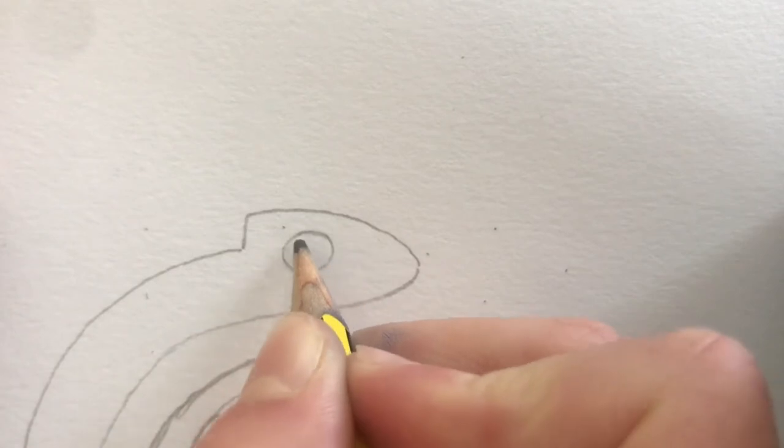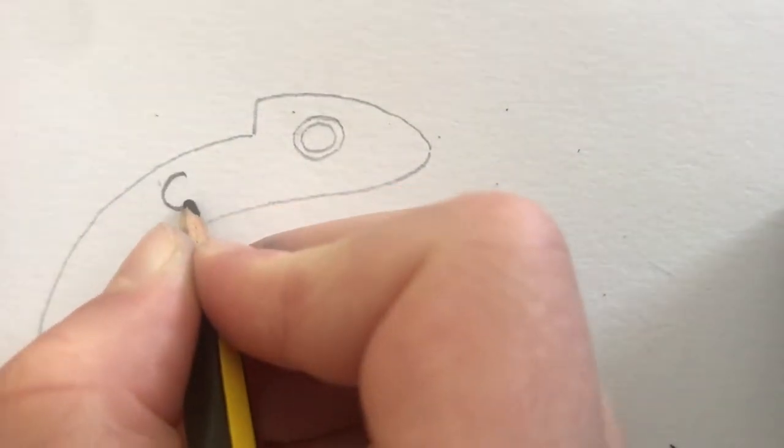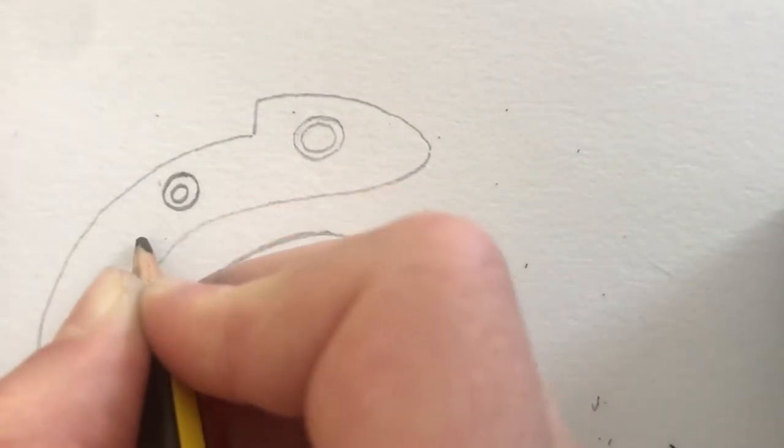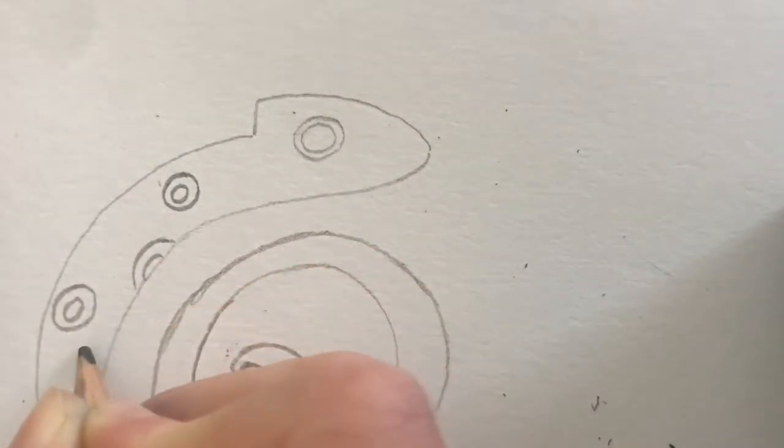So first I'm going to draw the eye, the outline, and then I'm going to draw different spots around it. So alternating between circles and semi-circles, so it's going to be two in each. So now I'm going to do it all over the body.